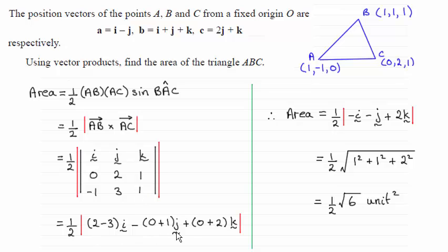And so it comes out to this result and now I need to find the magnitude of that vector. Working out the magnitude you can see it's one squared plus one squared plus two squared or rooted and then I've got half of this result and as you can see comes out to a half root six.